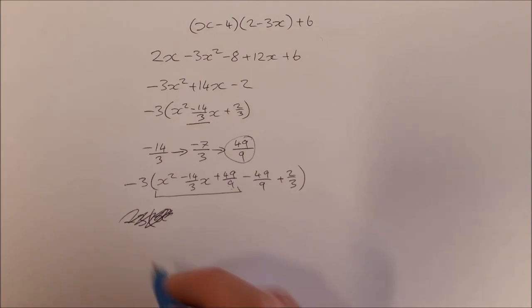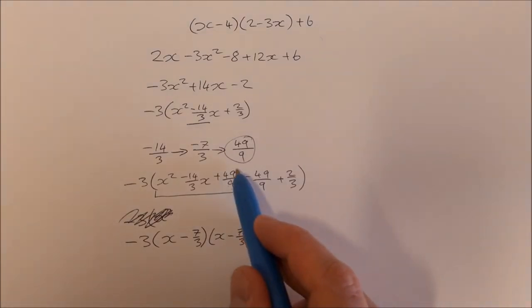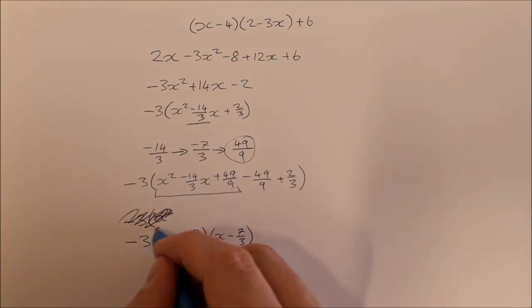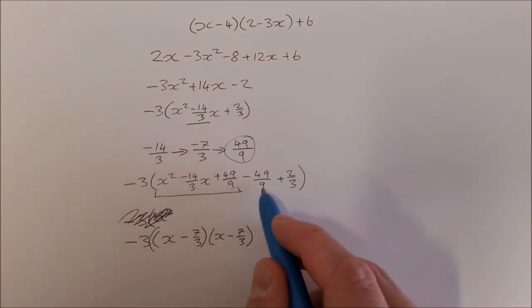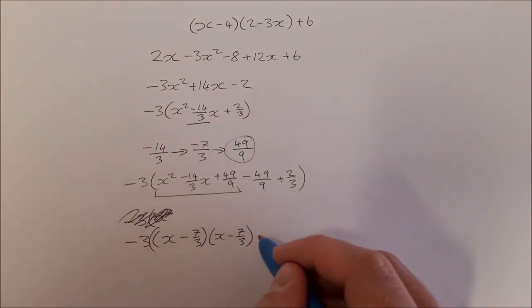So what it's going to be is minus 3 times x minus 7 over 3 times x minus 7 over 3. So the 7 over 3, they'll multiply together to give you that, they'll add together to give you that. And then we have minus 49 over 9 plus 2 over 3, which works out to be minus 43 over 9.